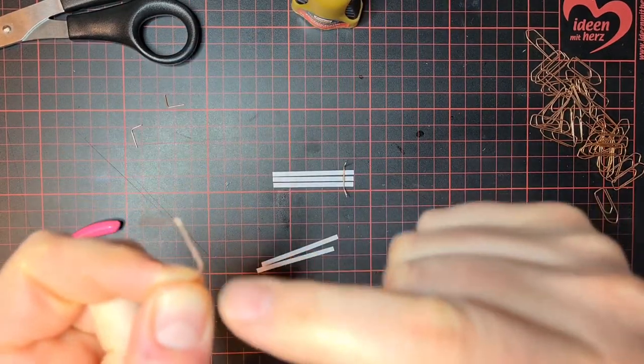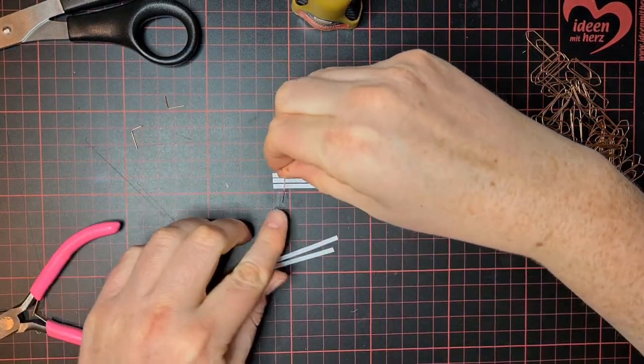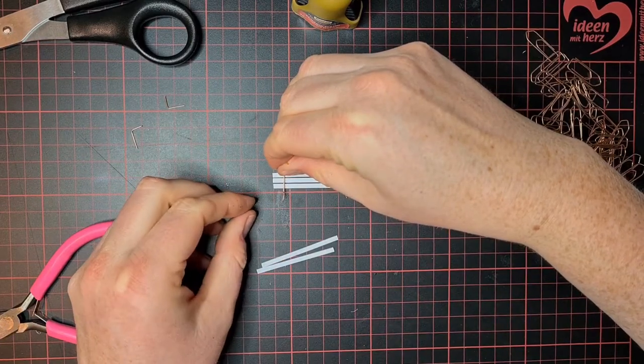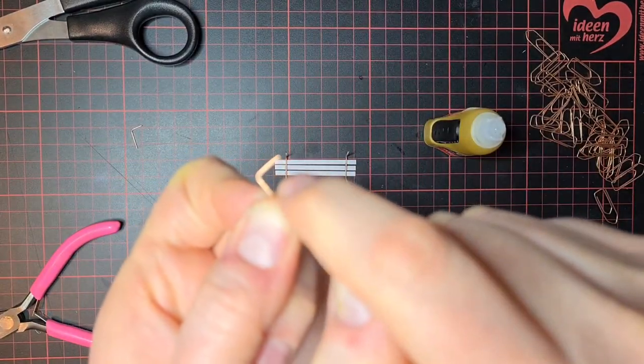Then add glue to the second one and do it from the other side. Put some superglue inside of the angle.